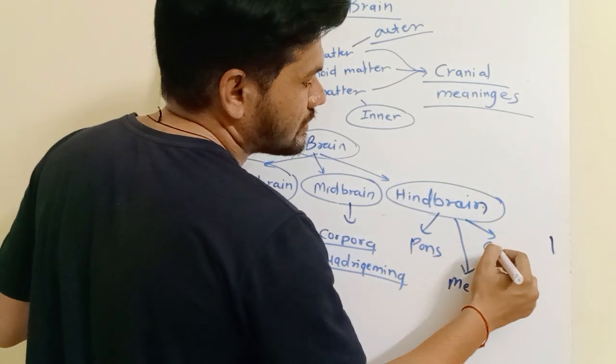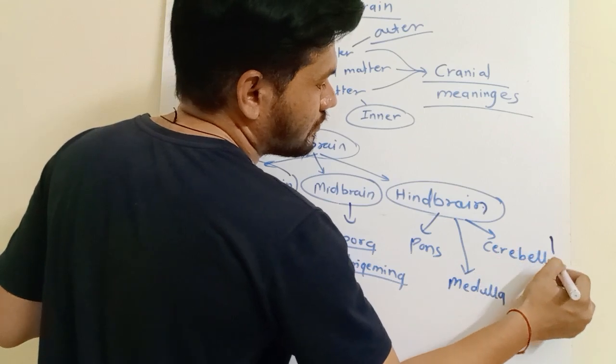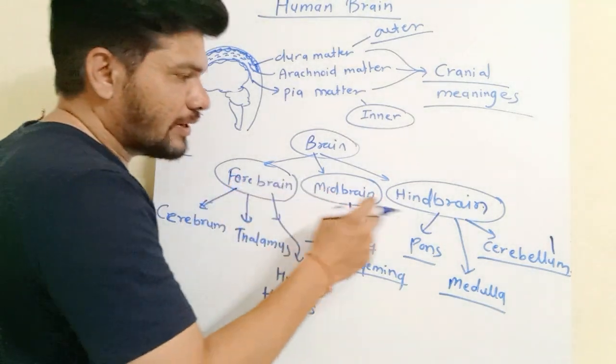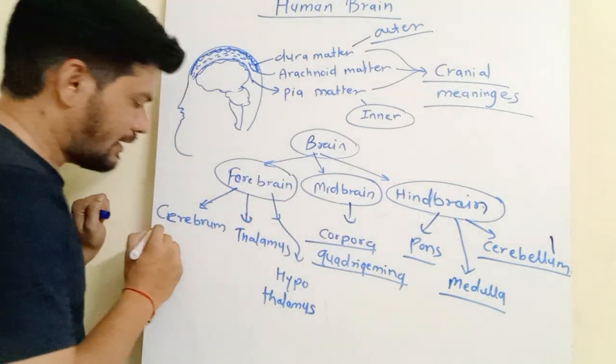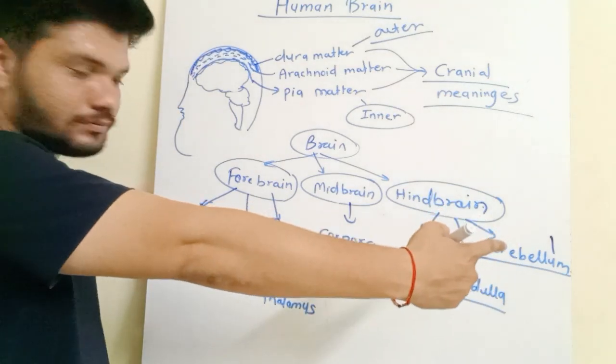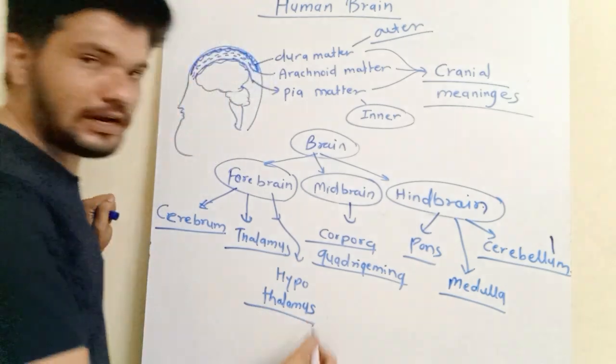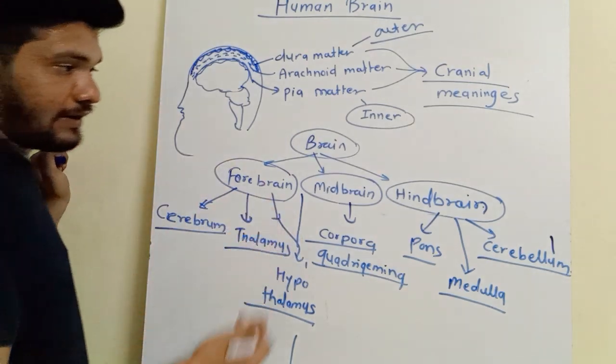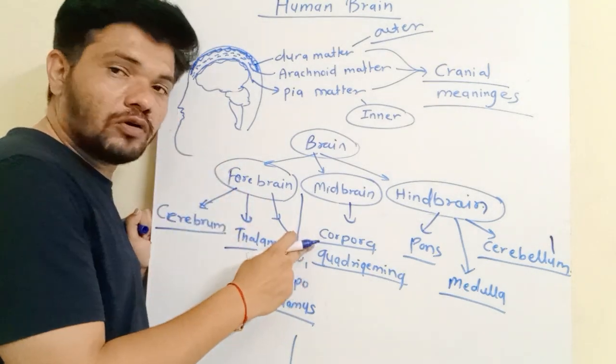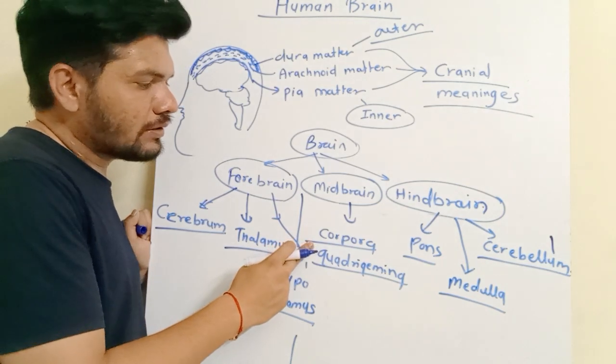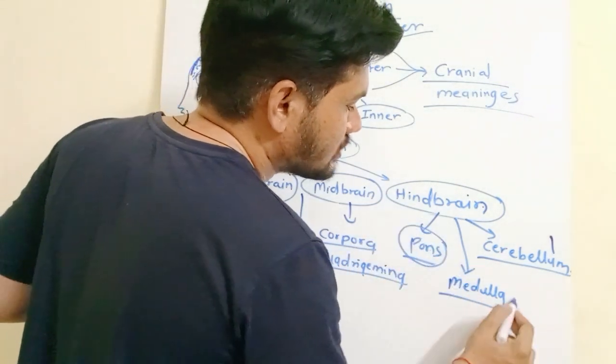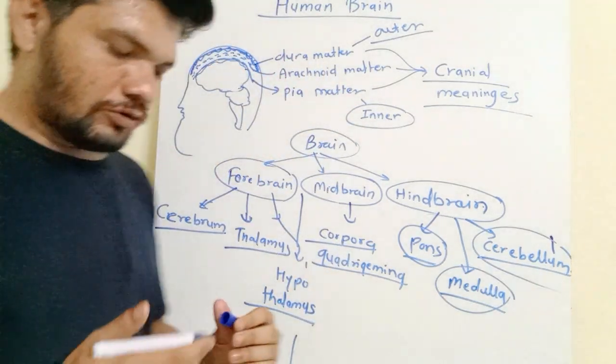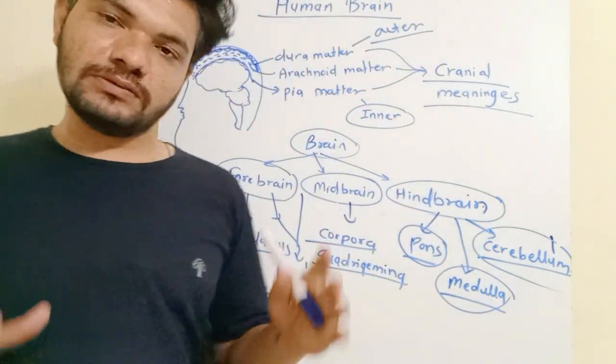So this is how you can divide your brain parts: forebrain, midbrain, hindbrain. Forebrain is divided into three parts: cerebrum (don't confuse it with cerebellum), thalamus, and hypothalamus. These are the parts of forebrain. Then midbrain is having four lobe structure called corpora quadrigemina. Then hindbrain is divided into three parts: pons, medulla, and cerebellum. We are going to talk about in more detail about all these three structures.